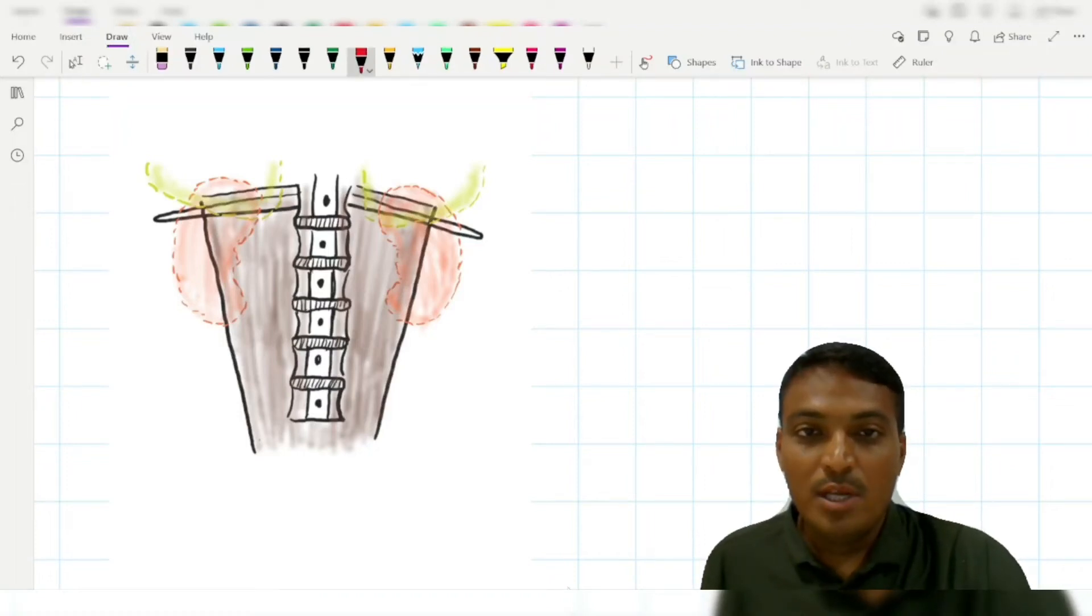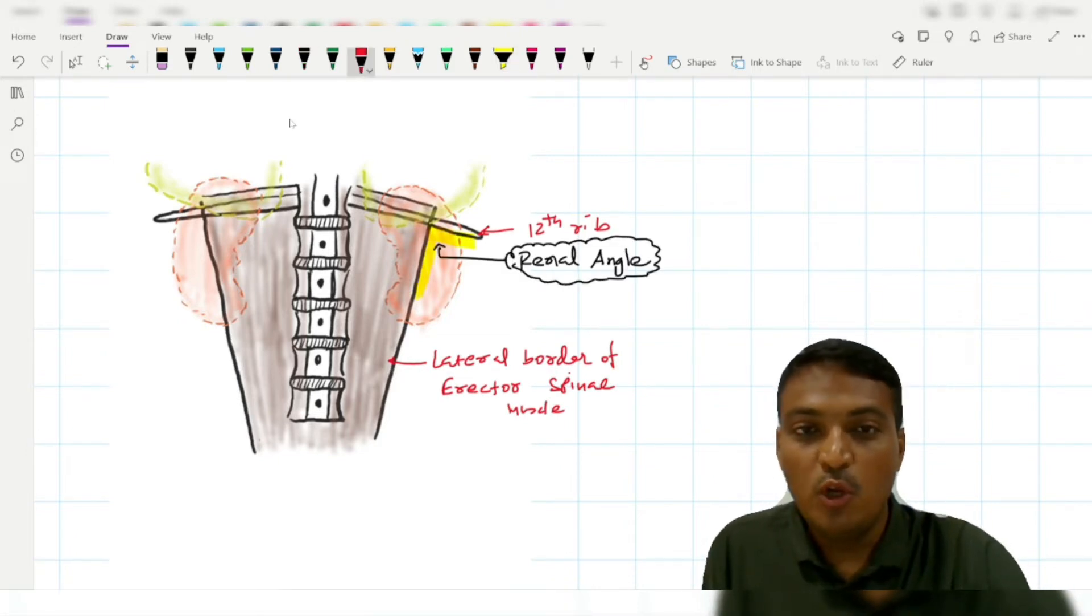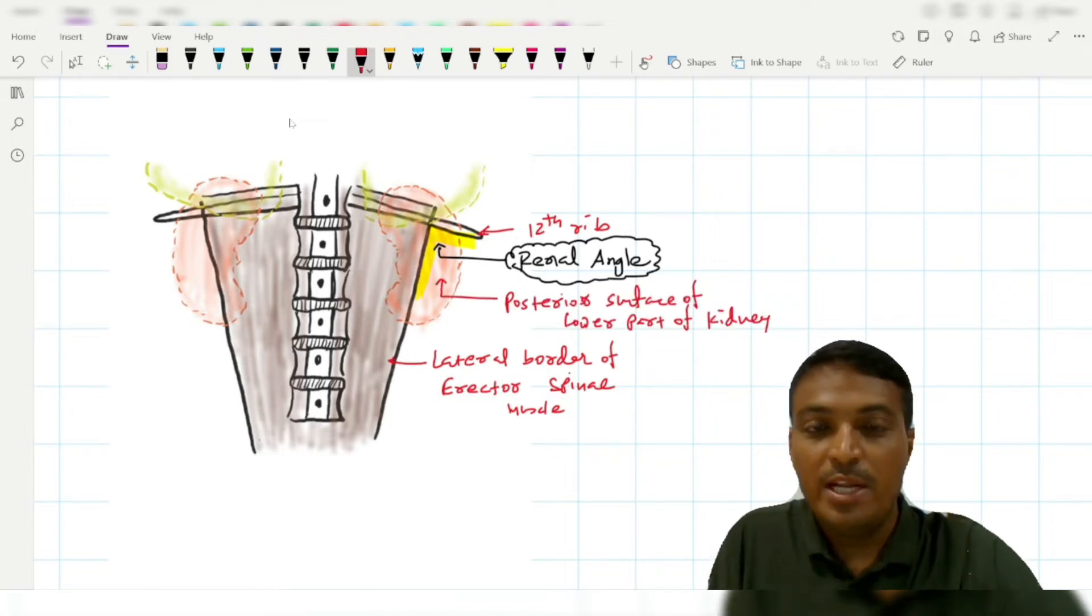The renal angle is the angulation between the 12th rib and the lateral border of the erector spinae muscle. The posterior surface of the lower part of the kidney lies beneath this renal angle. This surface of the kidney does not encroach on the costodiaphragmatic recess of the pleura.